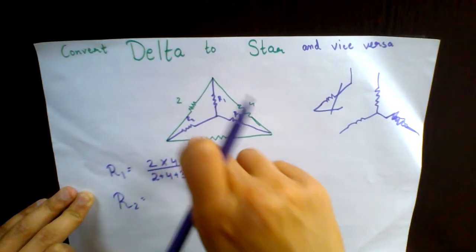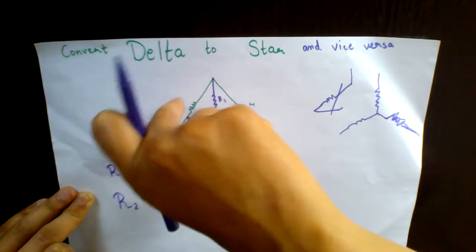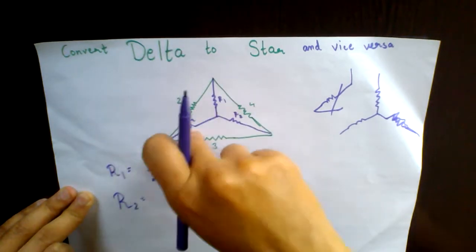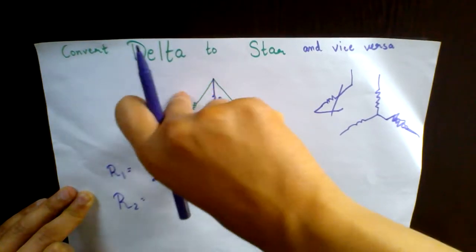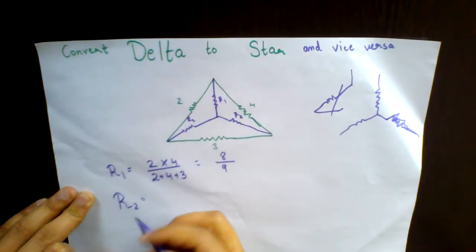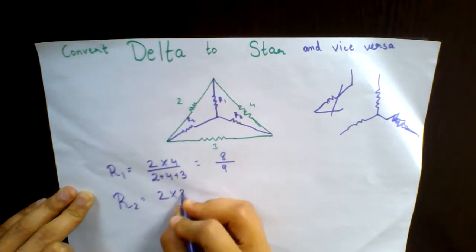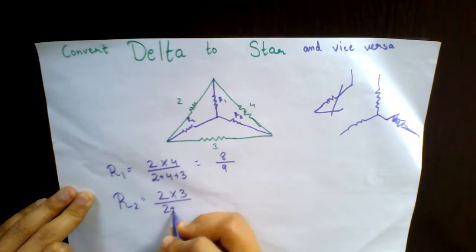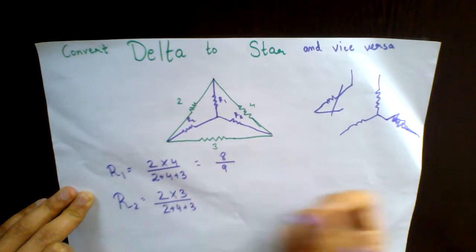And the only thing that changes is if you have R2 over here, these are the networks which are opposite to it, which is 2 into 3 upon 2 plus 4 plus 3, which is 6 upon 9.